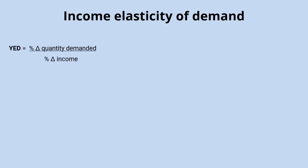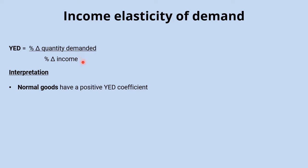The formula for calculating income elasticity of demand is: percentage change in quantity demanded divided by percentage change in income. The coefficient can be used to interpret what type of good you're looking at. Normal goods have a positive income elasticity of demand — an increase in income leads to an increase in quantity demanded, so positive divided by positive gives a positive coefficient.